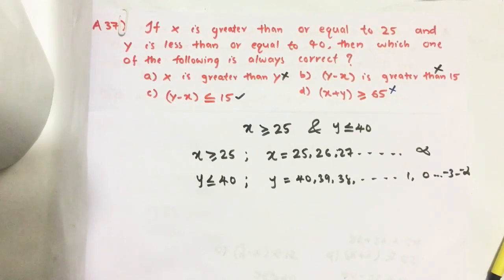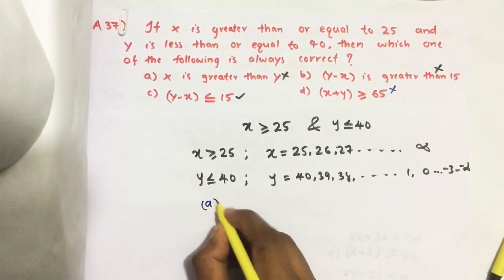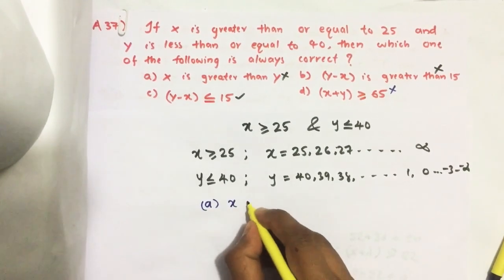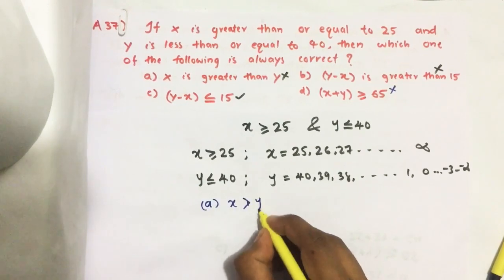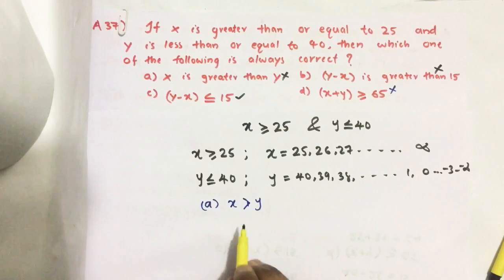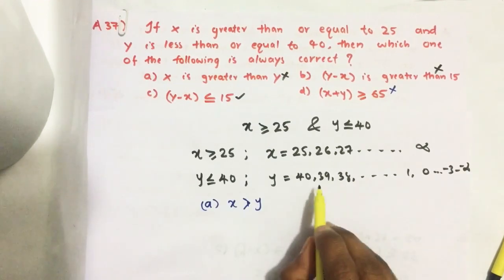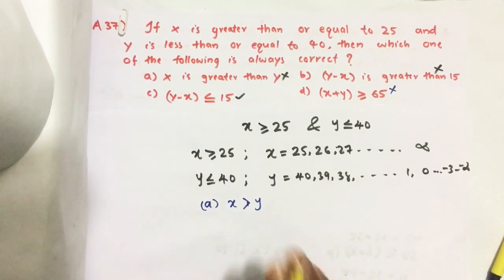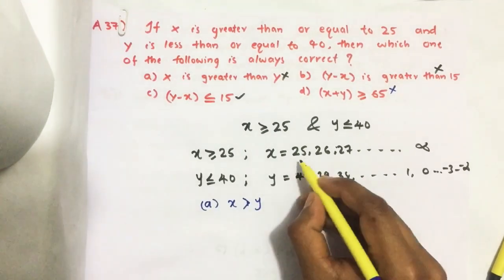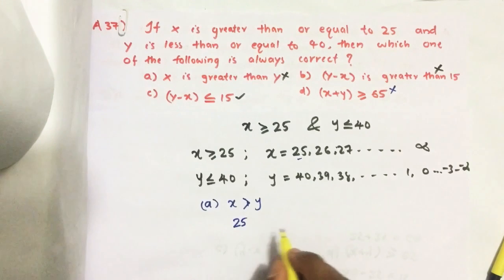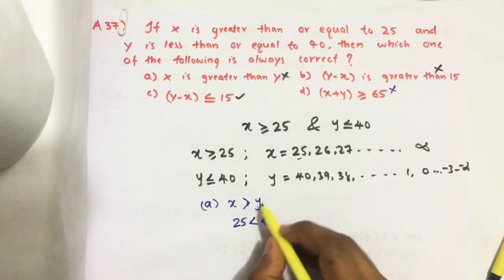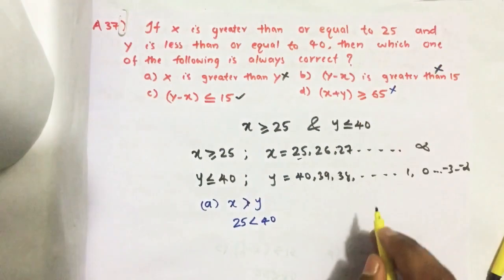First, consider option A: X is greater than Y. To say this statement is true or valid for any value of X and Y, it should be valid. Let us check. Suppose if I am taking X equal to 25 and Y equal to 40, but here 25 is less than 40. So option A, we can rule it out.